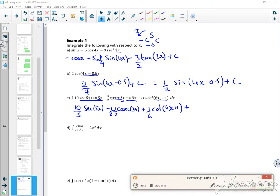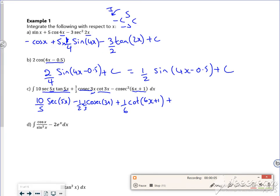You need to keep an eye on this timer when I'm in here for the five minutes. So that's plus C. If I tidy up a little bit, it's 2 sec(5x) - 1/6 cosec(3x) + 1/6 cot(6x+1) + C.